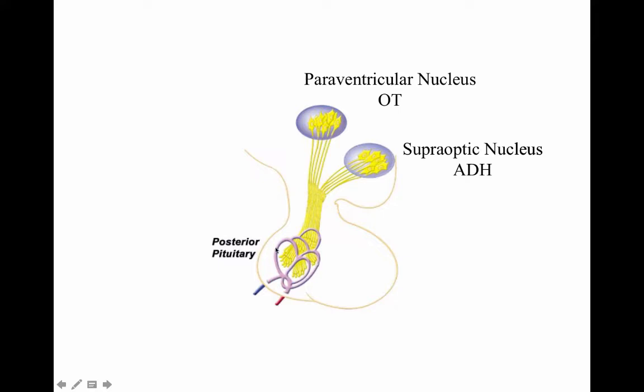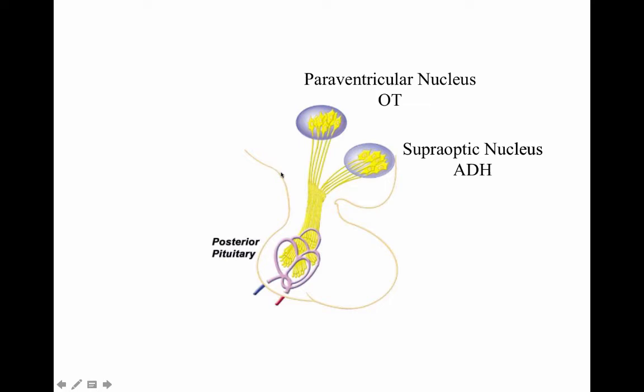The posterior pituitary does not actually create these hormones — it just stores them and allows connectivity into the bloodstream to distribute them to locations where they need to affect change.